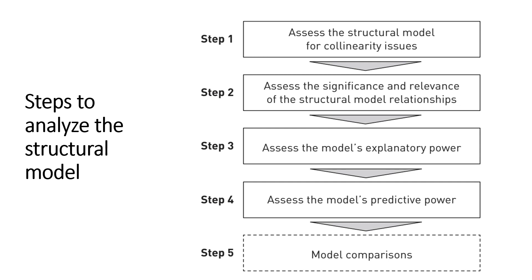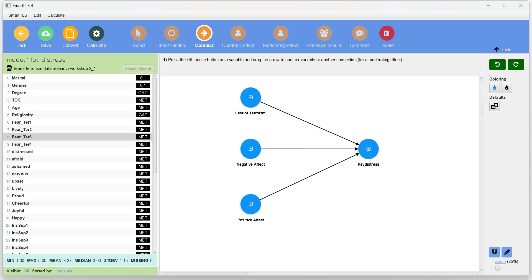Now comes the last, optional step to analyze the structural model — comparing different models, shown in dashed lines in the framework. At this point we have essentially finished the structural model steps. Unlike CB-SEM, the concept of overall model fit in PLS-SEM is not as applicable, because we have already assessed explanatory power using R-square and predictive power using PLS Predict. The main focus of PLS-SEM is assessing significance and relevance of structural model relationships. However, if applicable, we can compare different models.